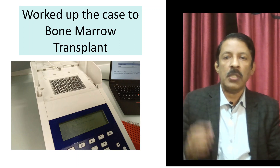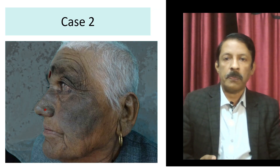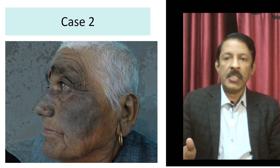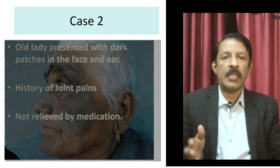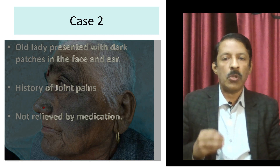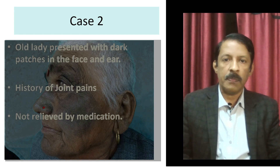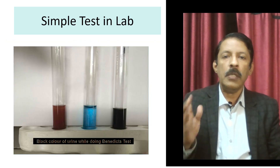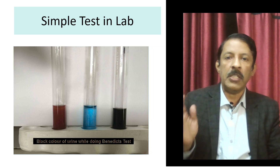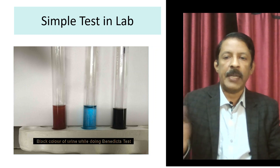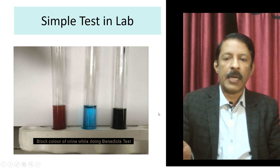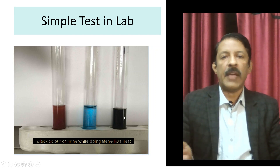We were then able to offer her a bone marrow transplant. Post that bone marrow transplant, her dependence on transfusions drastically came down. This is case two: a 70-year-old lady presenting with dark patches in her eyes and ears, with a history of joint pains not being relieved by medication. A simple test — the one we teach in first MBBS — no guesses: this is Benedict's test, a black reduction, a case of alkaptonuria.